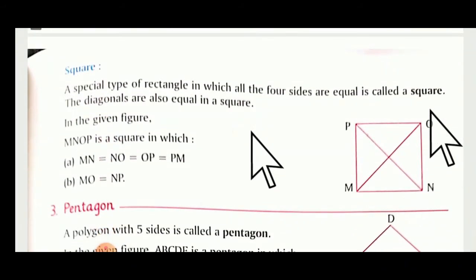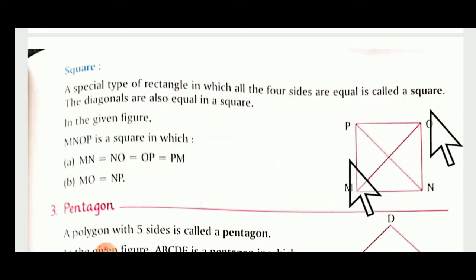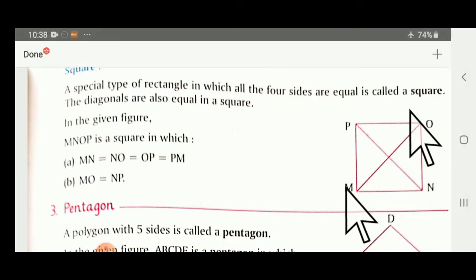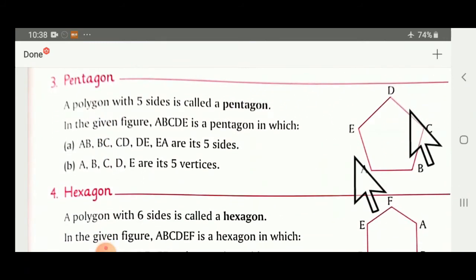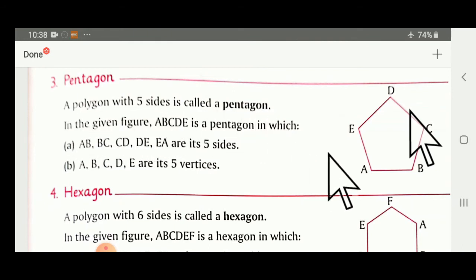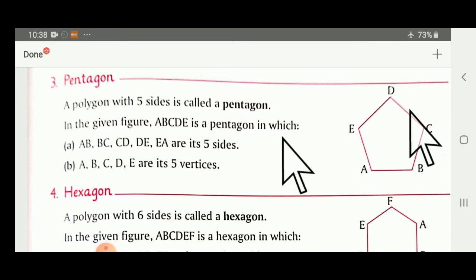The next type is a square — a special type of rectangle in which all four sides are equal, and the diagonals are also equal. Then a pentagon: a polygon with five sides. Sides AB, BC, CD, DE, and EA — five lines, five sides, and five vertices.